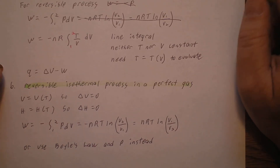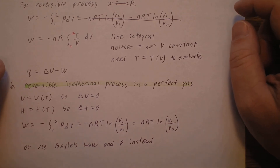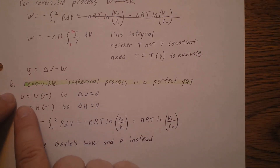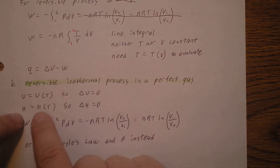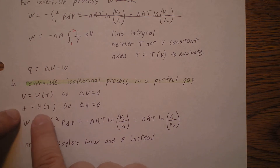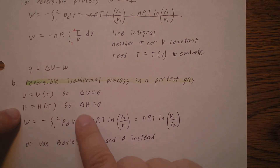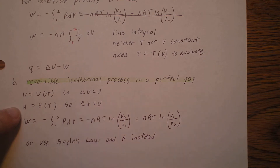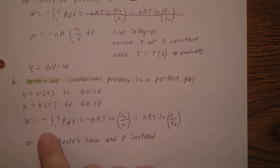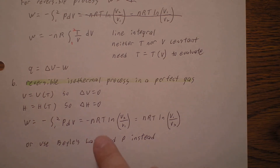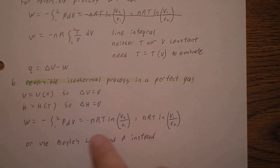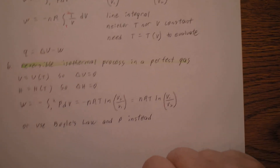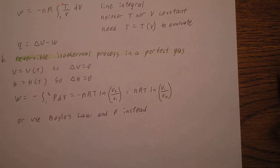The sixth process is a reversible isothermal process in a perfect gas. Since U is a function of temperature only, delta U equals zero because it's isothermal — isothermal means constant temperature. Enthalpy is also a function of temperature only for a perfect gas, so delta H equals zero. Work is the integral from state one to state two of P dV, which equals minus NRT times the natural log of V2 over V1, or equivalently NRT times the natural log of V1 over V2. We could also use Boyle's law and express this in terms of pressure instead of volume.